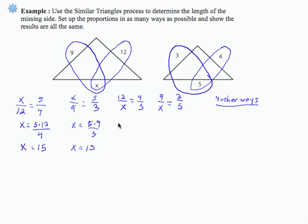Here we have 5 times 12. So 60 equals 4x. And we're using the cross product method here. Divide both sides by 4. So 15 equals x.